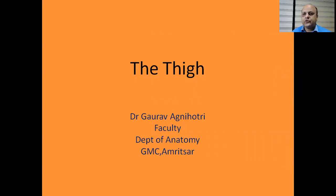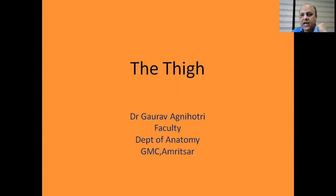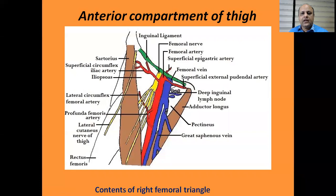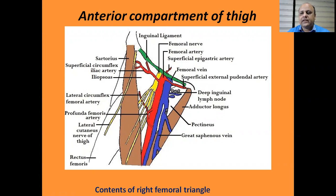Hi there. Today we'll be dealing with the important aspects of the human thigh. The thigh is the region between the hip joint and the knee joint. It has got different compartments: an anterior compartment, a medial compartment, and a posterior compartment.